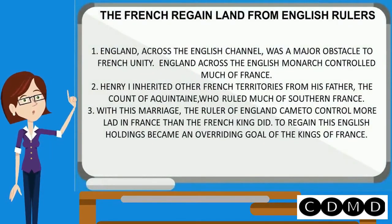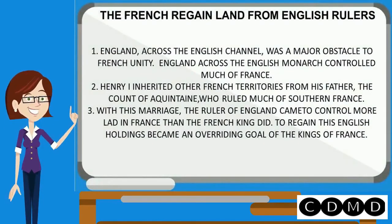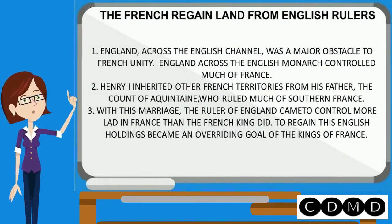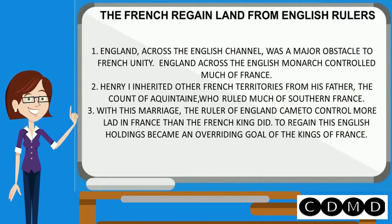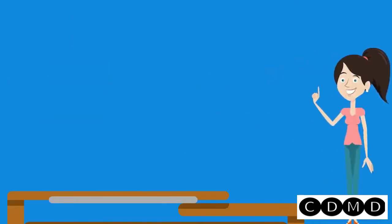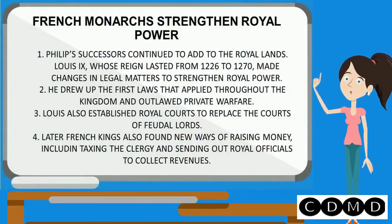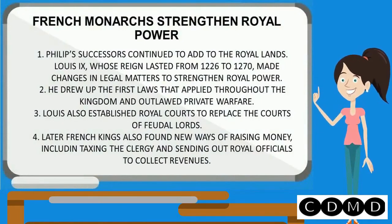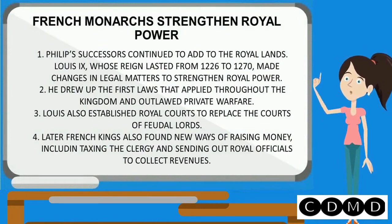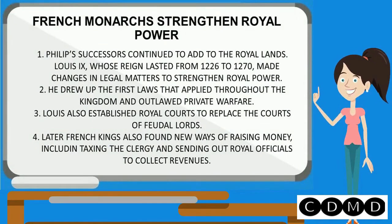The French regained land from English rulers. England across the English Channel was a major obstacle to French unity, as the English monarch controlled much of France. Henry inherited other French territories from his father, the Count of Aquitaine, who ruled much of southern France. Philip's successors continued to add to the royal lands. Louis IX, whose reign lasted from 1226 to 1270, made changes in legal matters to strengthen royal power, drawing up the first laws applied throughout the kingdom and outlawing private warfare.